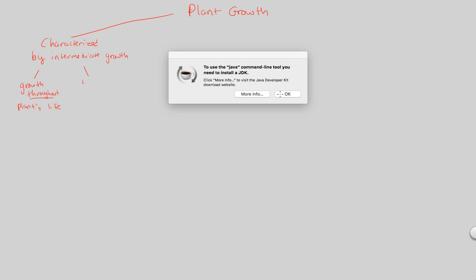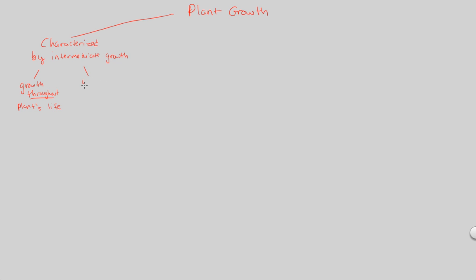That growth is, furthermore, usually continuous for that reason. It's also going to happen in this continuous manner unless the plant is in a sort of dormant state — unless the plant or seed is dormant. So we have continuous growth throughout the plant's life; that's called indeterminate growth.